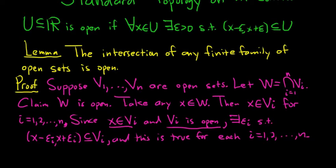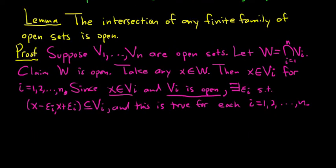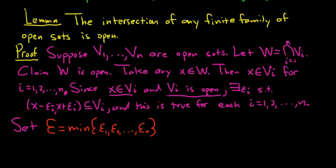We have epsilon sub 1, epsilon sub 2, all the way to epsilon sub n. And we want to find an epsilon that's small enough so that we can create a neighborhood around x that's contained in all of these V sub i's. So the key idea here is, a key idea in all of mathematics, is that whenever you have a finite set, you can take the minimum. So we're going to set epsilon equal to the minimum of epsilon sub 1, epsilon sub 2, dot dot dot, epsilon sub n. So our epsilon will be the minimum of these.